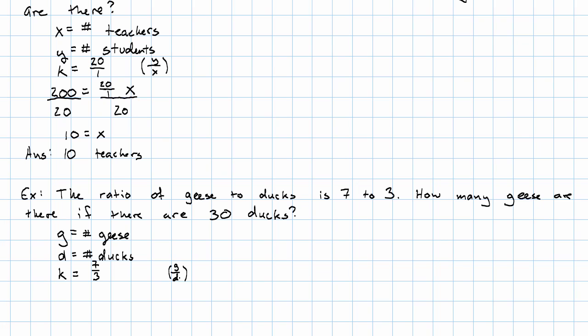Since this ratio is G over D, D is the variable that's going to act like X in the ratio equation, and G is going to act like Y. So that means I'm going to have G is 7 thirds D.